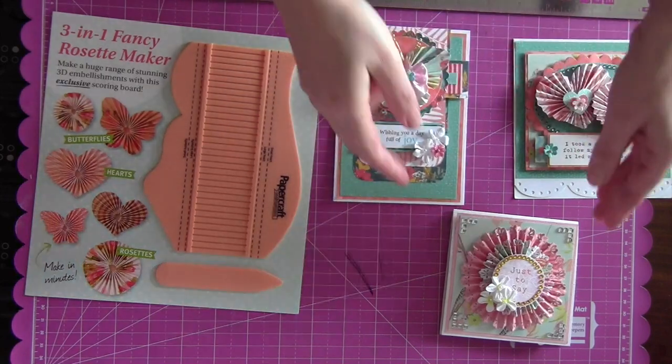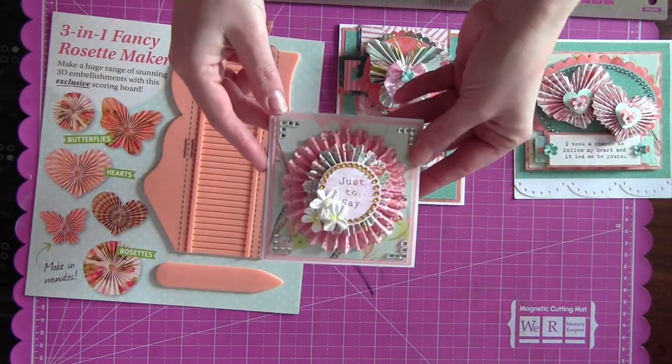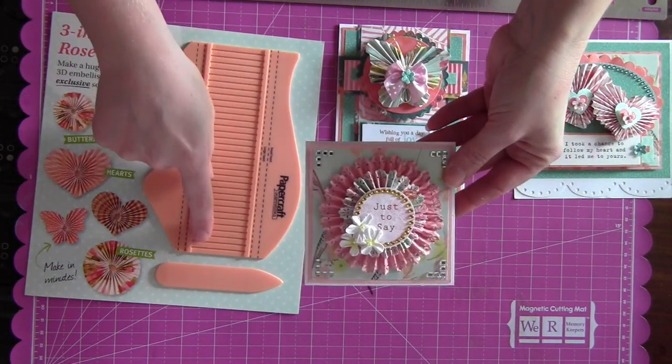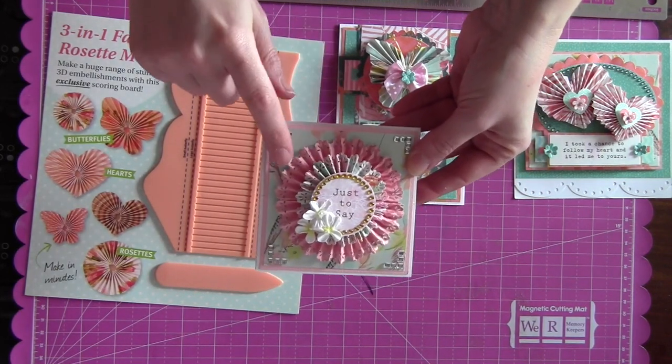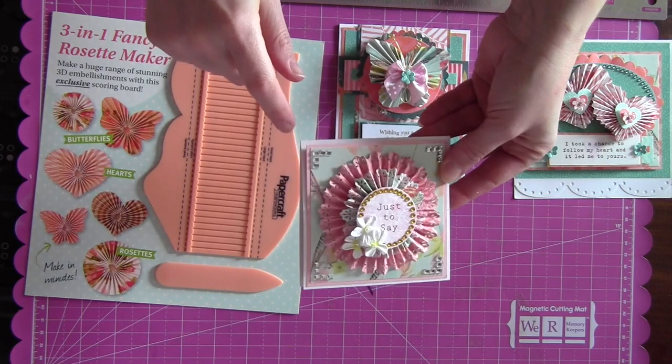If you want to make a round 3D rosette, just use a simple strip and score it down the middle. You can give a nice lacy effect by punching your strip before you score it to give this lacy edge.